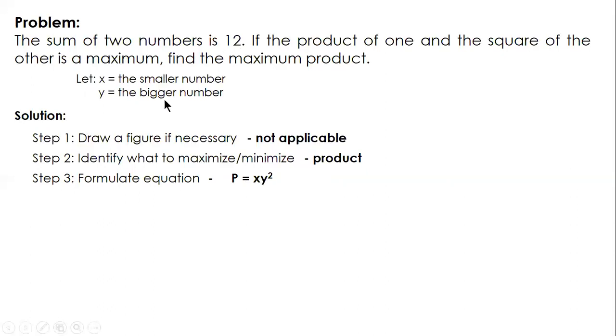If you will ask why y is squared, because we want the maximum product, therefore y should be the bigger number. So this is the equation and it's obvious that there are two variables. Step four: reduce the equation to a single variable. So to reduce, let's replace x in terms of y or y in terms of x. Since we have the additional condition x plus y equals 12, you will replace x because x equals 12 minus y. So substitute it and the equation now involves one variable only.